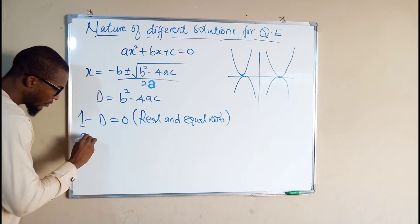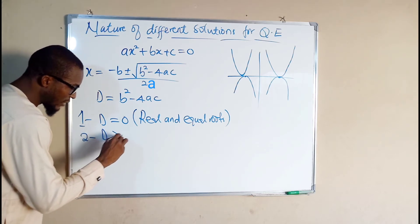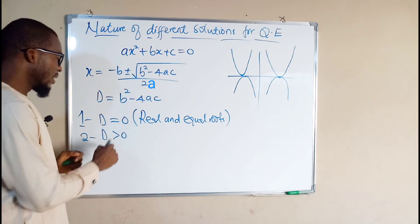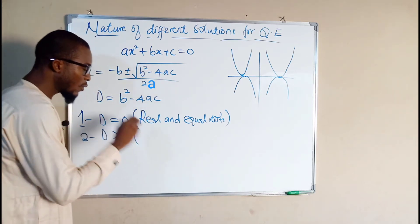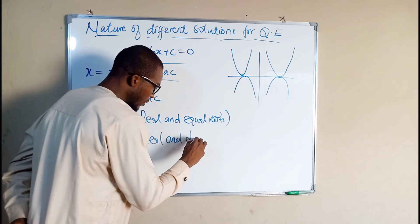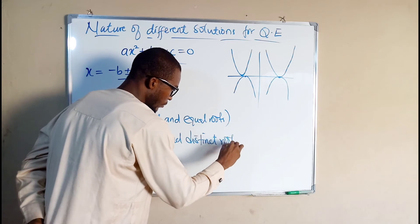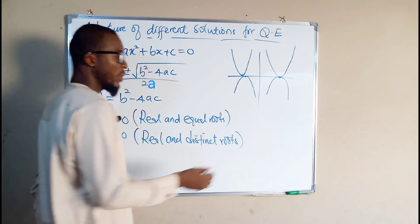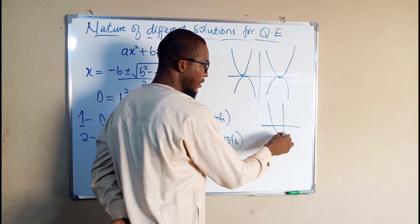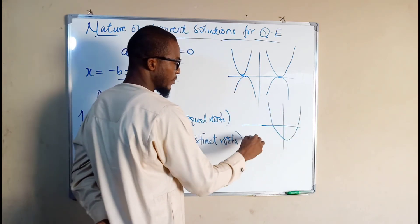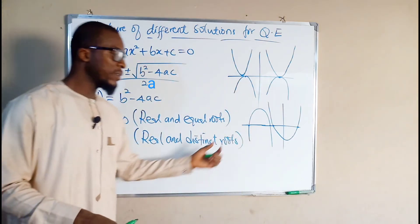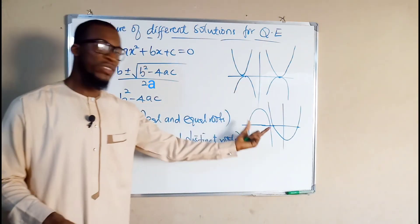Number two: if d is greater than zero — if you substitute the values for that quadratic equation for b squared minus 4ac and you realize the value you obtain is greater than zero — we say that quadratic equation has real and distinct roots. We can see a graph where the parabola touches the x-axis at exactly two points, whether open up or open down. We say these two points are the real solutions, and since there are two different solutions, the roots are real and distinct.